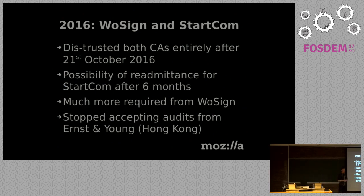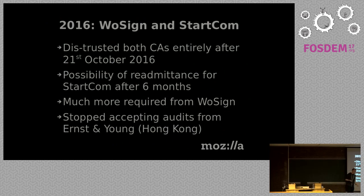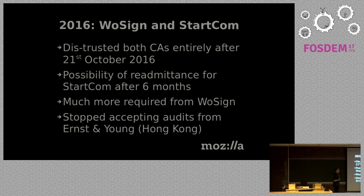We distrusted both CAs entirely from October 21, 2016. StartCom was given an opportunity for readmission after six months if they changed management away from WoSign, since they'd also moved to WoSign's issuance systems whose code quality was terrible. WoSign can apply after a year but must essentially rewrite their entire infrastructure. We also determined that several of WoSign's failures — including five-year-old OS software and vast tranches of certificates with wrong fields — should have been spotted by auditors. Their auditors, Ernst & Young Hong Kong, had given them a clean bill of health. We therefore stopped accepting audits from that particular E&Y branch, hoping to galvanize audit firms generally.